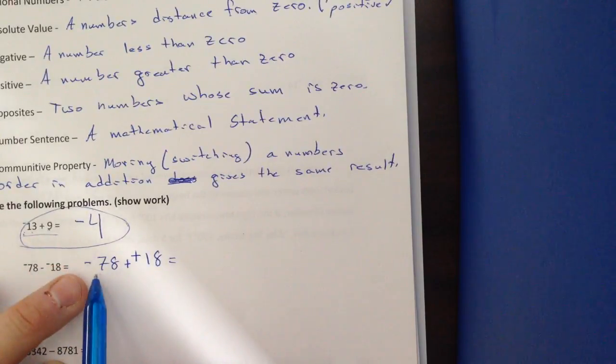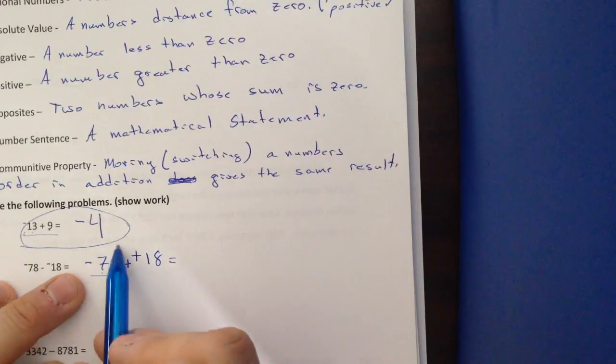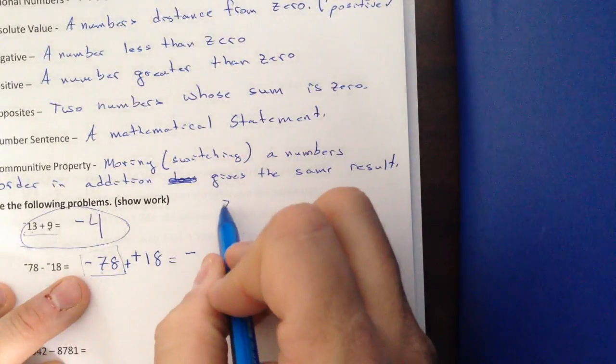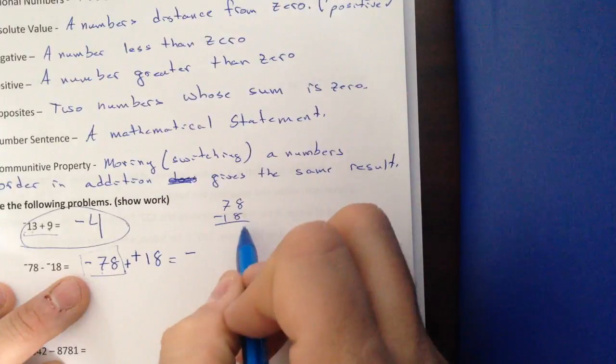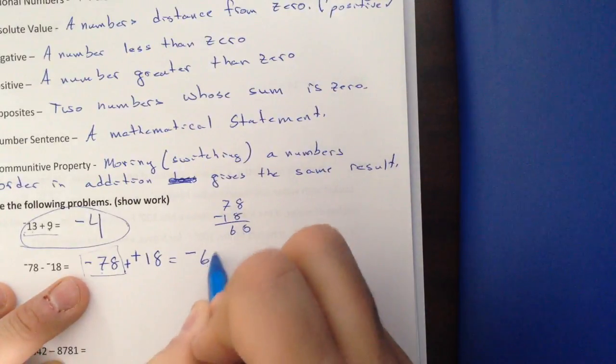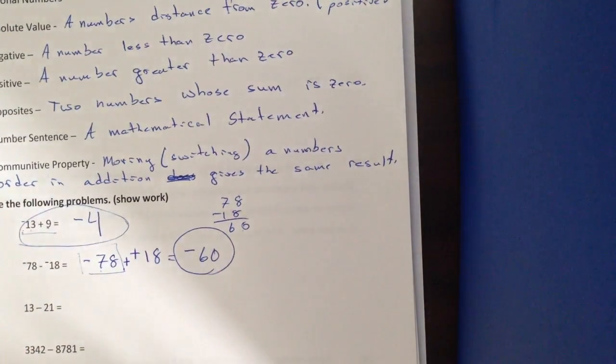So I have negative 78 plus 18. Now I go back to my first rule for adding integers, which is, signs are different. Subtract, keep the sign of the larger absolute value. Larger absolute value, my answer is going to be negative. And I have 78 minus 18, 0, 6, 60.